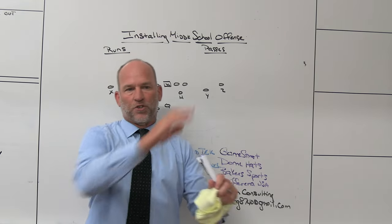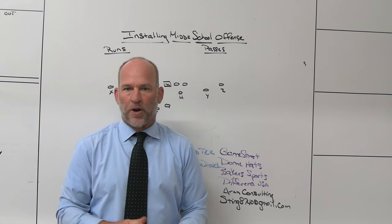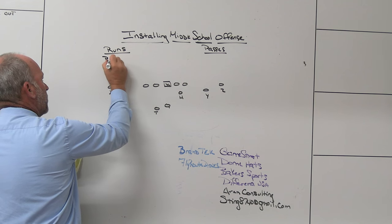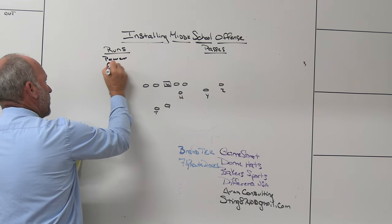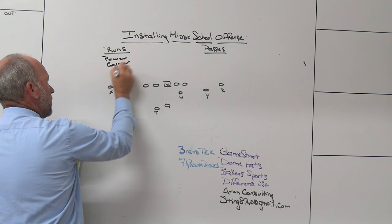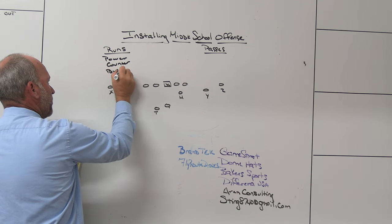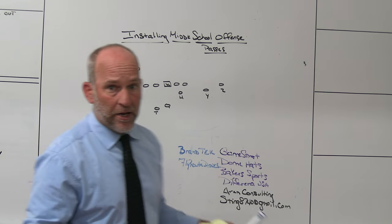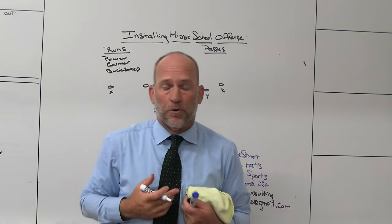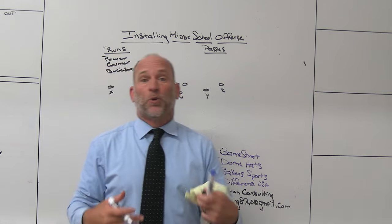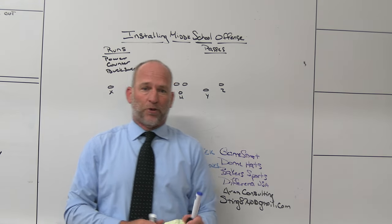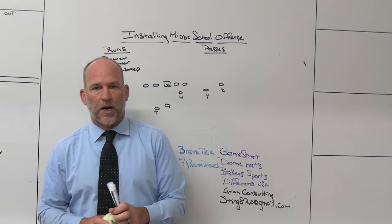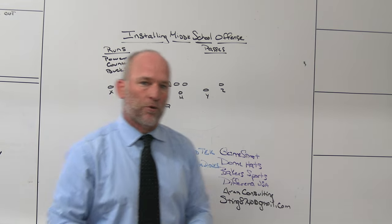This is where we start, this is bread and butter, this is what we do. From the runs I talked to them about, I would go power, I would go counter, and then I would go buck sweep for my perimeter run. All opinionated—this is just things that I would do. I'm going to give you my explanation of why I would do them. I'm not just going to throw them out there and say this is the system you got to run.